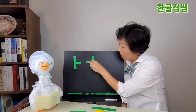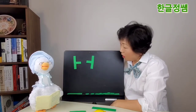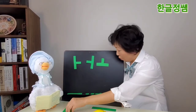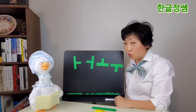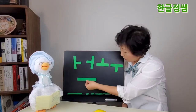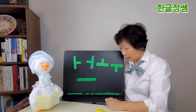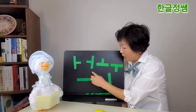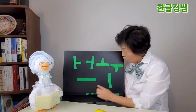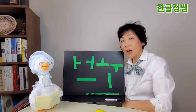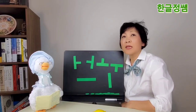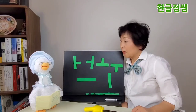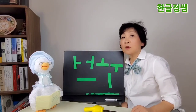아, 어, 오, 우, 으, 이. Those six vowels are very simple basic vowels. Today we learn basic six simple vowels.